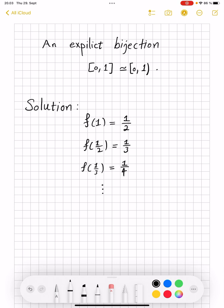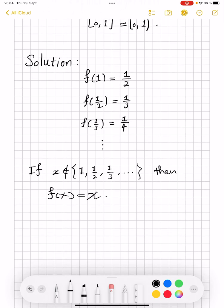So I will say these are specific values of f. And then, if x is not among the list, 1 and one-half and one-third and so on, then f of x equals x. So that will be my function. I specify exactly what f does on these points from this countable sequence. And then, on the remaining part, f is the identity map.